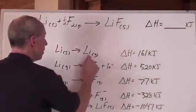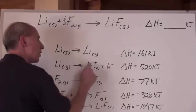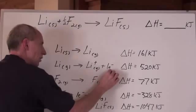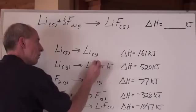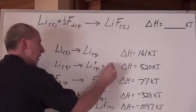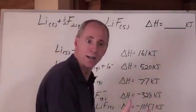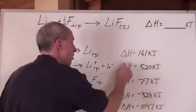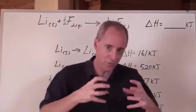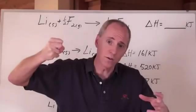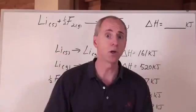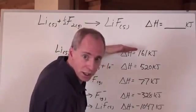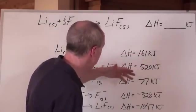Now that we've taken the lithium and turned it into a gas, we can actually remove the electrons. The lithium gas becomes a lithium ion by losing an electron. That electron has to be given to somebody — in the chemical bond that forms, it's given to the non-metal. The change in that energy is 520 kilojoules, because removing the electron from lithium gas requires energy.